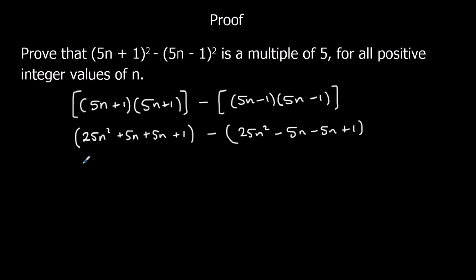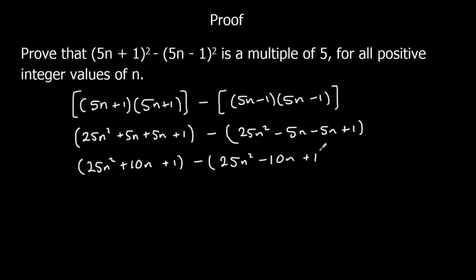We can simplify them both a little bit. So: 25n squared plus 10n plus 1, minus 25n squared minus 10n plus 1. Now we need to do this take away all of this. So 25n squared minus 25n squared — that's nothing. 10n minus minus 10n: minus minus means plus, so that's 20n. And 1 minus 1 is nothing.